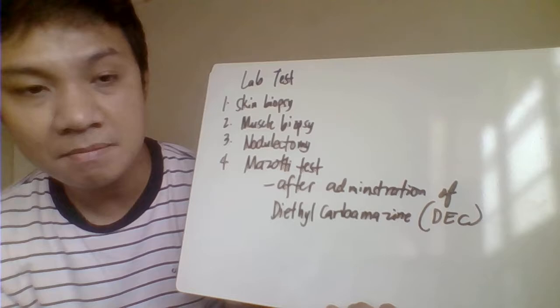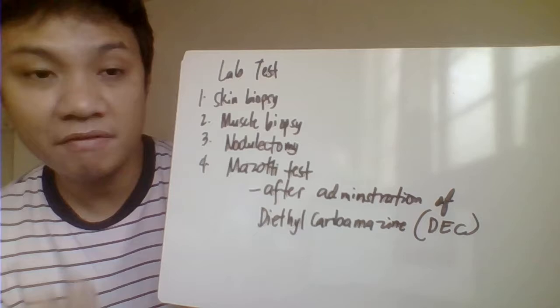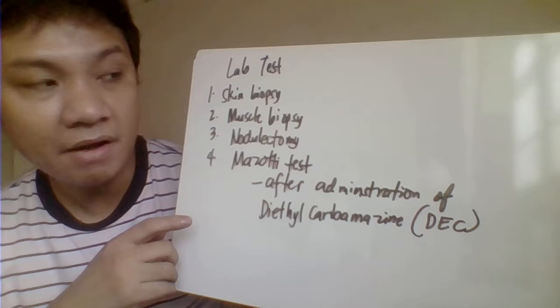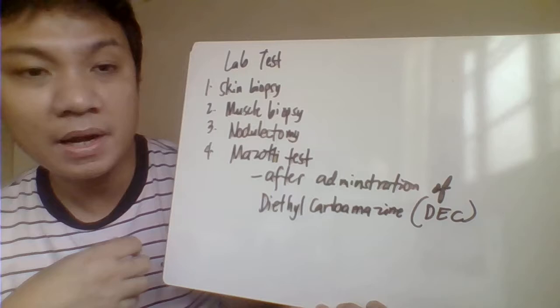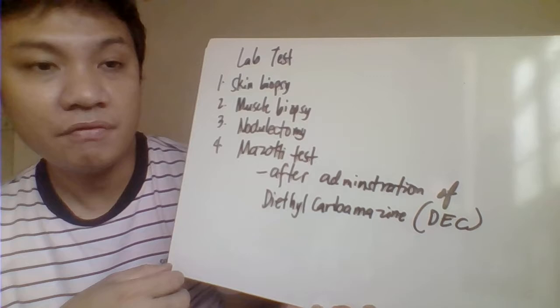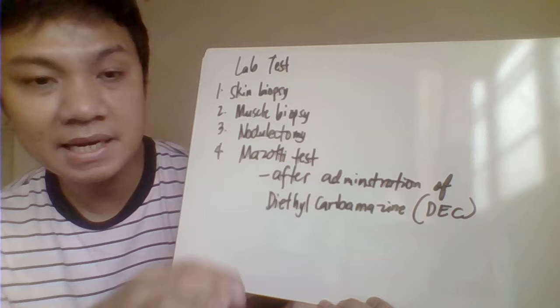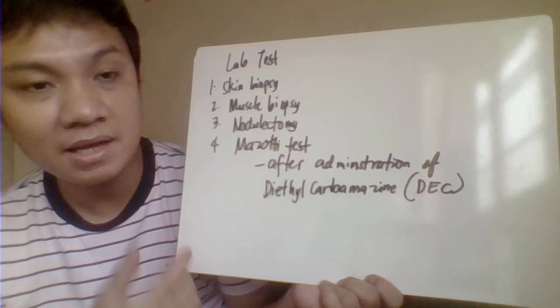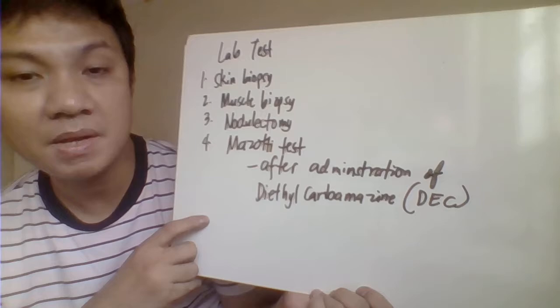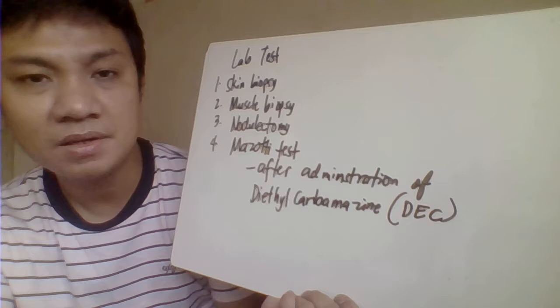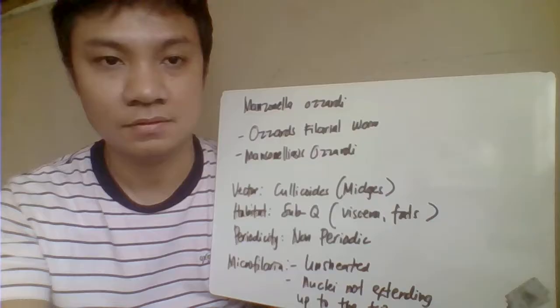For laboratory tests, first we have skin biopsy and Mazzotti biopsy. Blood collection is not diagnostic for identification of Onchocerca volvulus infection since the parasite is not in peripheral blood. We also have nodulectomy — surgical removal of the nodules or onchocercoma — to isolate or recover the adult worm encapsulated in nodules. The Mazzotti test is a manifestation where after the patient is given diethylcarbamazine, within 24 hours the patient experiences extreme exhaustion, lymphadenopathy, headache, and skin rashes. This reaction confirms a positive infection.